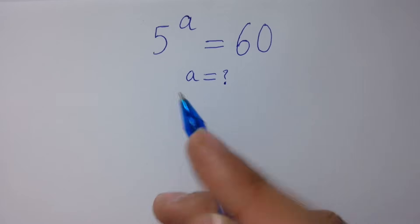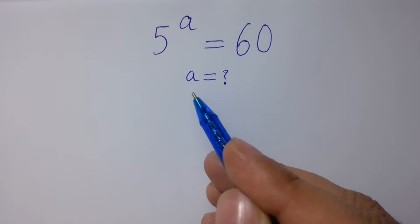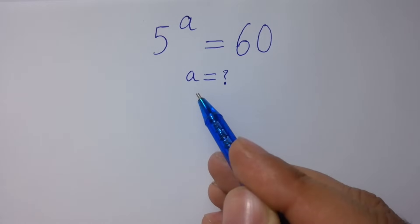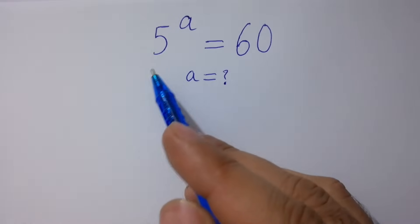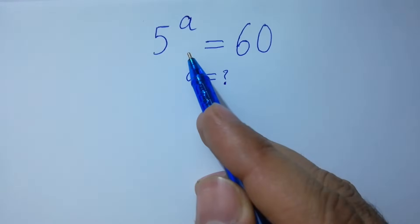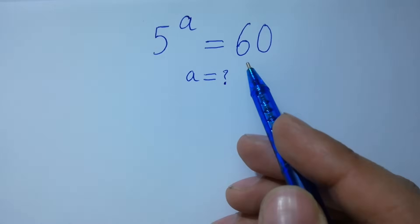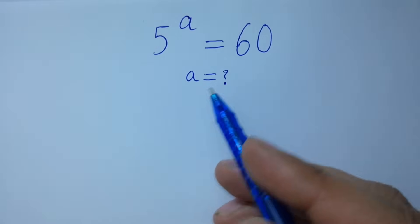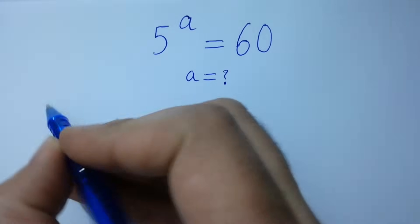Hello friends, find the value of a if 5 to the power a equals 60. Let's have a solution.